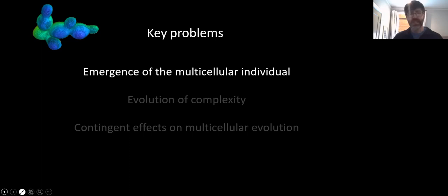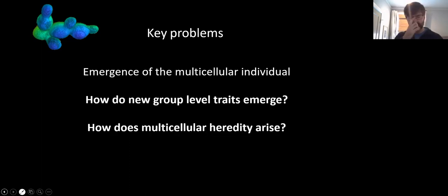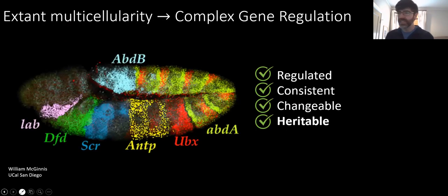And in particular, we'll focus on two separate questions. How in simple nascent multicellular organisms, how do new group-level traits emerge? And second, how does multicellular heredity arise?